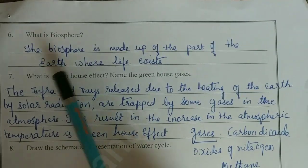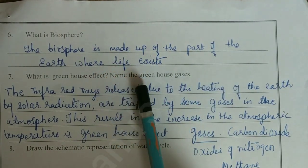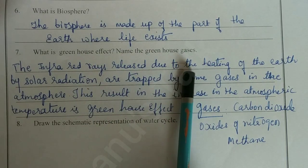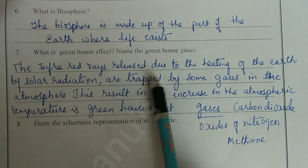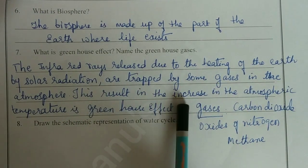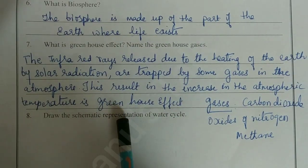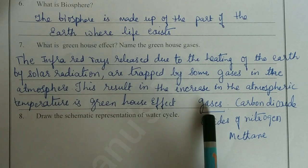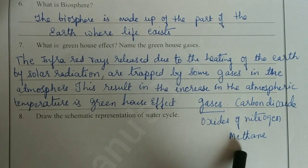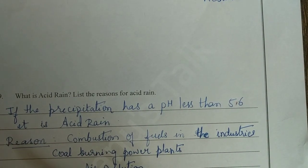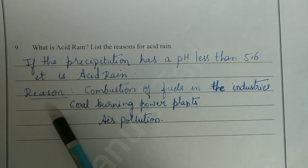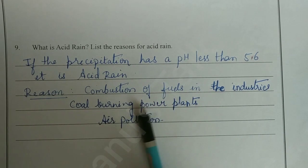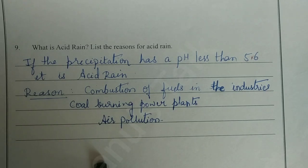What is biosphere? The biosphere is made up of the part of the earth where life exists. What is the greenhouse effect? The infrared rays released due to heating of the earth by solar radiation are trapped by some gases in the atmosphere — this increase in atmospheric temperature is called the greenhouse effect. Greenhouse gases: carbon dioxide, oxides of nitrogen, and methane. What is acid rain? If the precipitation has a pH less than 5.6, it is acid rain. Reasons: combustion of fuels in industries, coal-burning power plants, and air pollution.